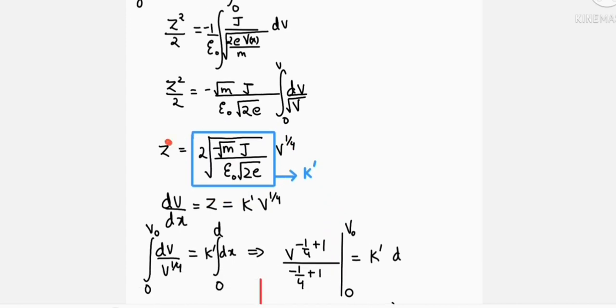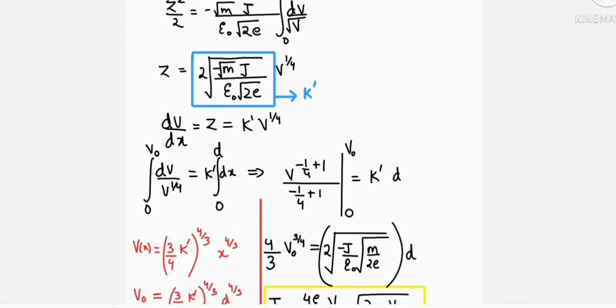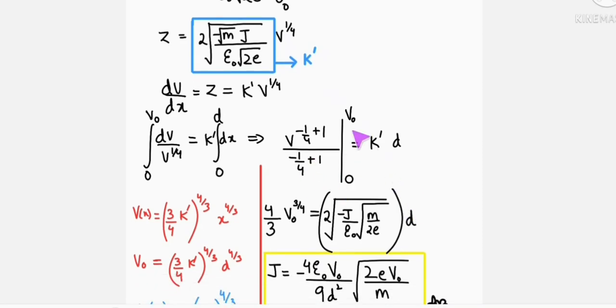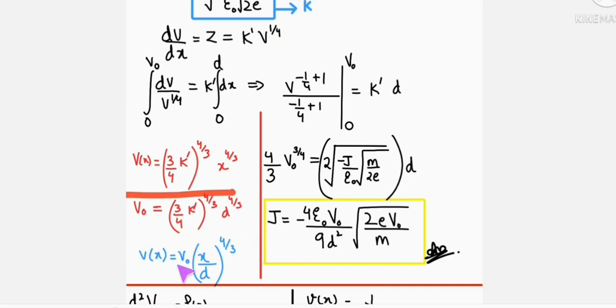Now we know that Z equals DV by DX. On integrating, we get 4 by 3, V0 raised to 3 by 4, equals K prime into D. We integrate from 0 to V0, and from dividing these two equations we get V as a function of X equals V0 times X by D raised to 4 by 3.